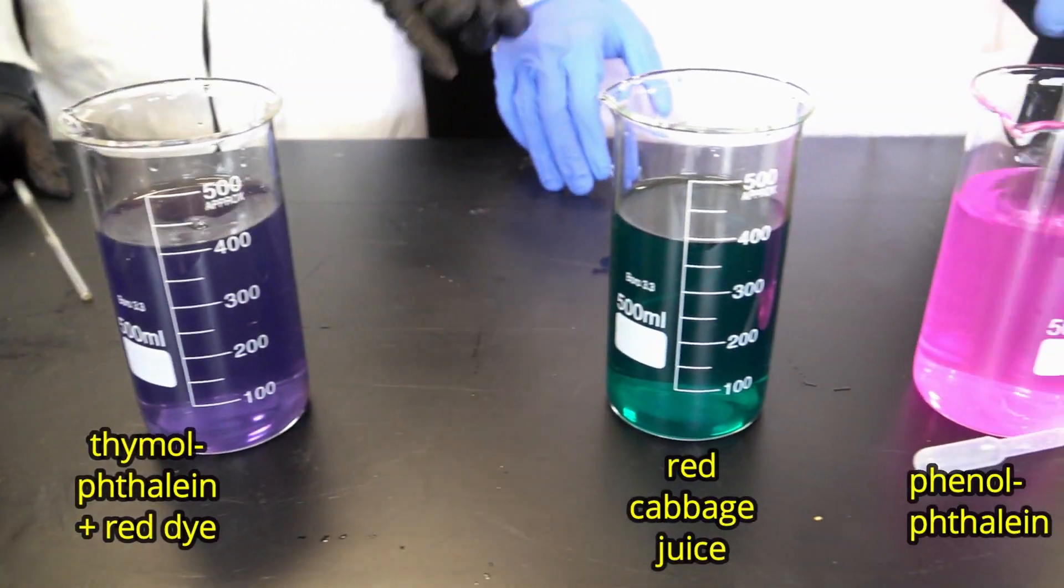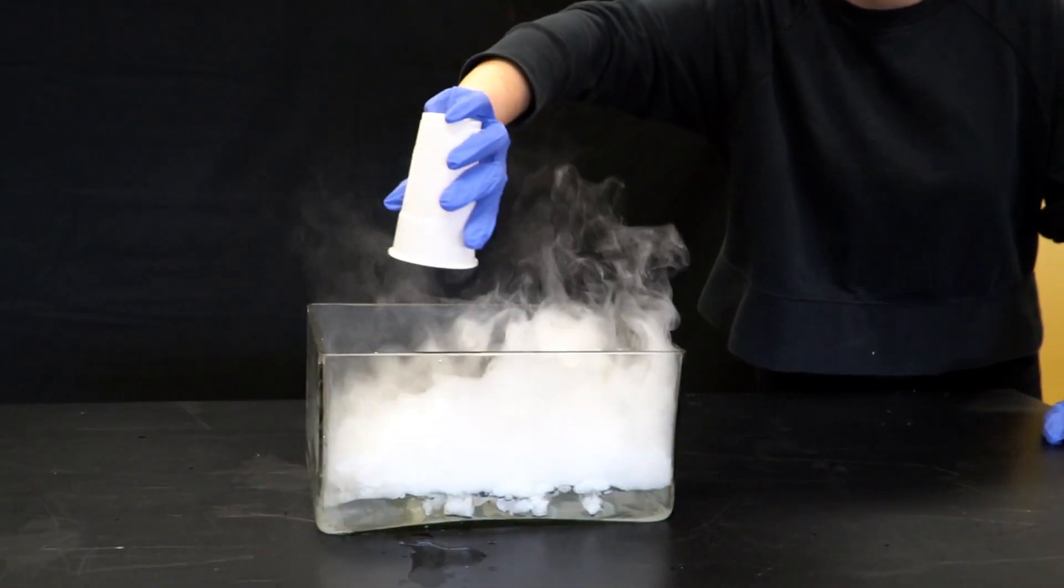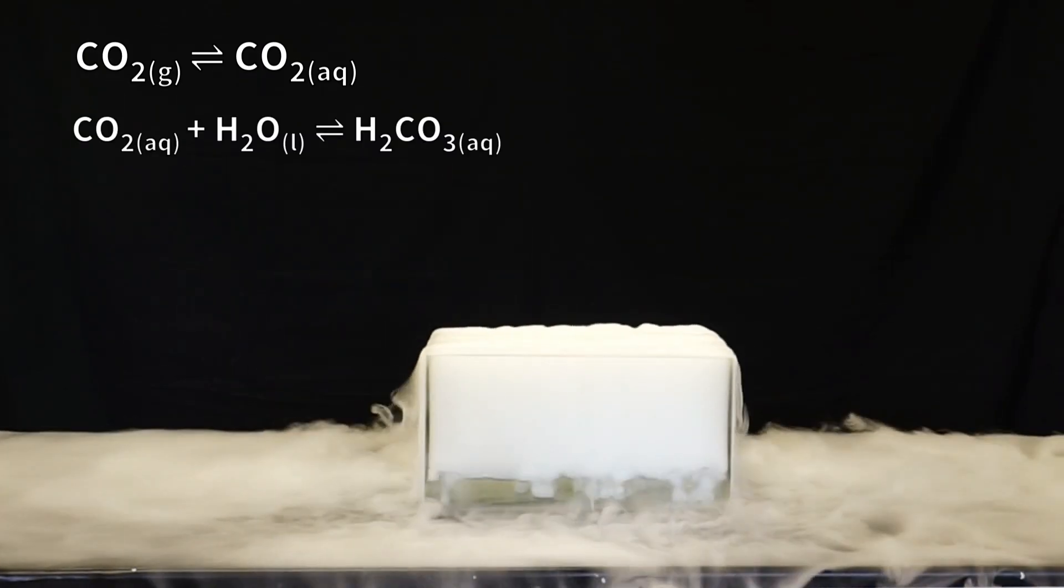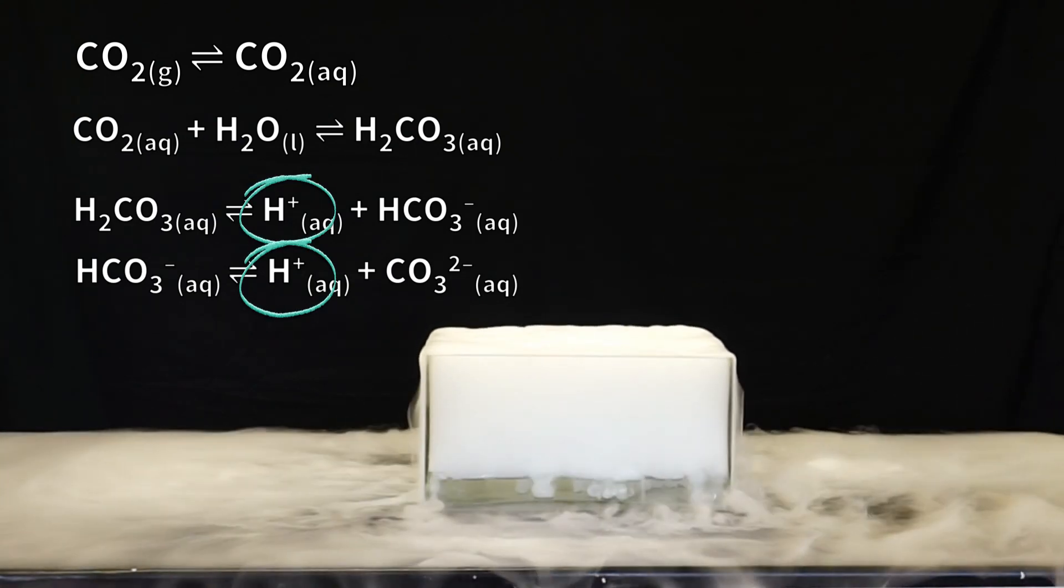To achieve gradual decrease of pH we used dry ice. When added in water some carbon dioxide dissolves in it and produces carbonic acid which in turn releases protons and leads to slow decrease of pH.